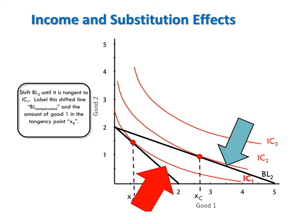To do that we need to add a third budget line to the graph. This budget line is called the compensated budget line and really represents a hypothetical. It allows us, when moving from the original budget line to the compensated budget line, to simulate what would happen if the price of good x relative to the price of good y fell but the consumer's utility stayed the same.